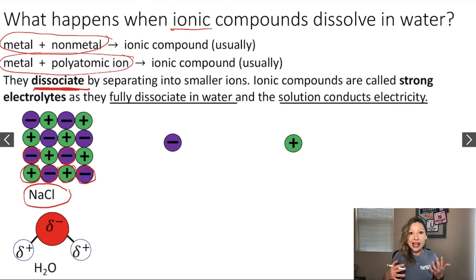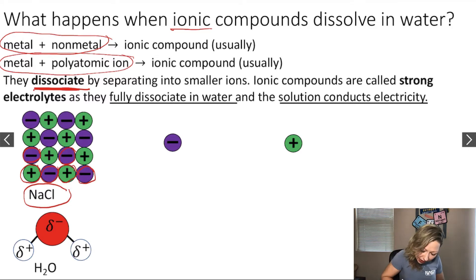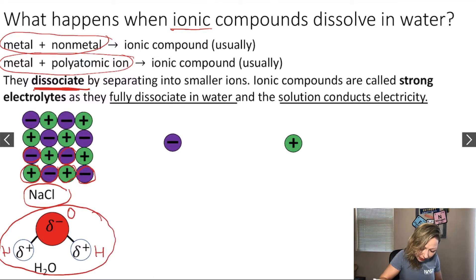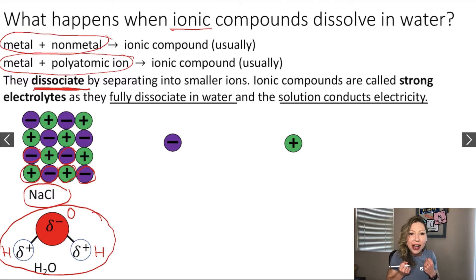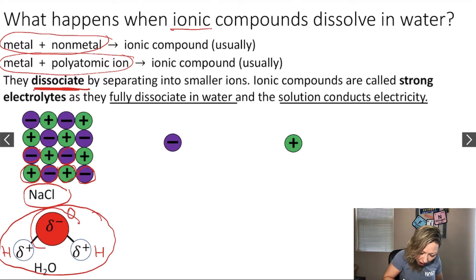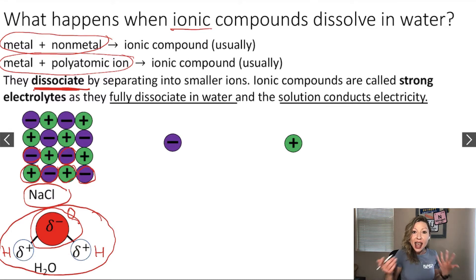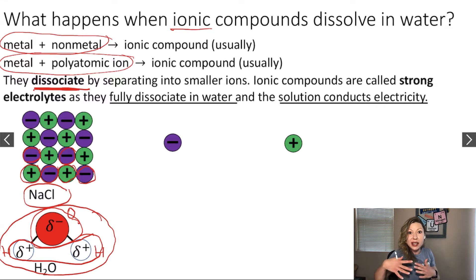This process is called solvation. What's really interesting is that water molecules actually have a partial positive and a partial negative side. Here we have a water molecule — this is our oxygen atom and these are the hydrogen atoms. Oxygen is quite greedy; it loves electrons. So when it bonds with hydrogen atoms, it pulls the electrons closer to itself. The oxygen side of the water molecule has a partial negative charge because you have more electrons towards that side, and the hydrogen side has a partial positive charge because the electrons are further away from it.